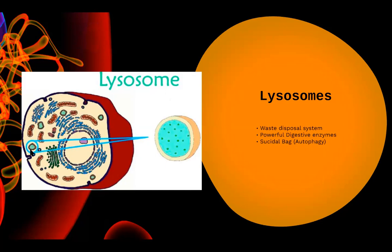To repeat: the powerful digestive enzymes are packed within the lysosome. If there is any problem in the cell, the lysosome bursts open, releasing the digestive enzymes outside. Those digestive enzymes cause digestion of the whole cell, resulting in the killing of the whole cell. That is why at times they are termed the suicidal bag.